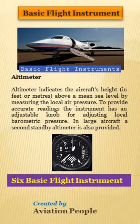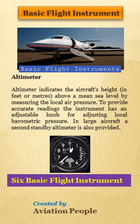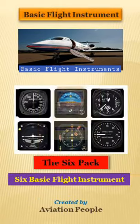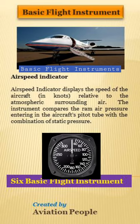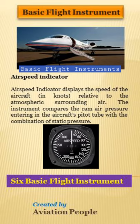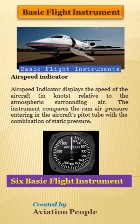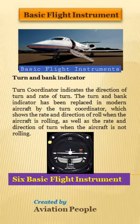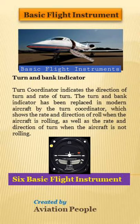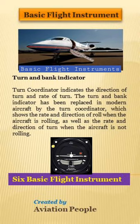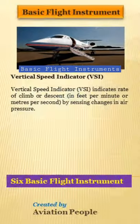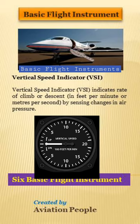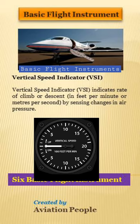The Altimeter indicates the aircraft's height above mean sea level by measuring the local air pressure. The Airspeed Indicator displays the speed of the aircraft in knots relative to the surrounding air. The Turn and Bank Indicator indicates the direction and rate of turn. The Vertical Speed Indicator indicates rate of climb or descent.